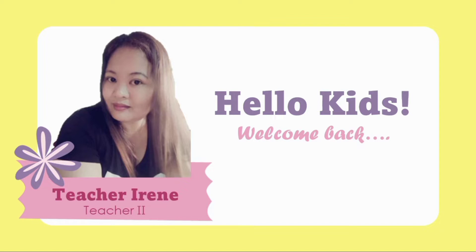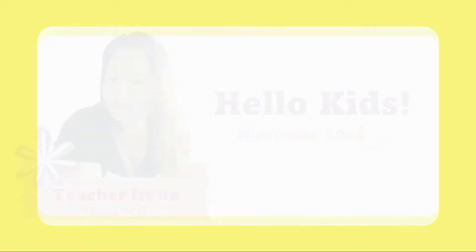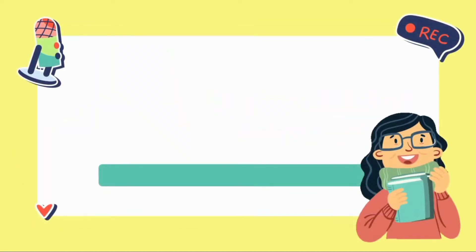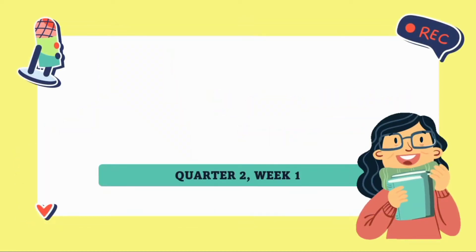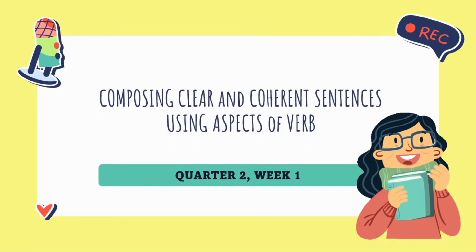You have learned about the simple tenses of the verb, and now you will be encountering the other aspect of verbs. We're going to learn how perfect tenses differ from the other aspects of verbs and how they are used. Let's get started! Quarter 2, Week 1 Learning Activity Sheet No. 1 is all about composing clear and coherent sentences using aspects of verbs.